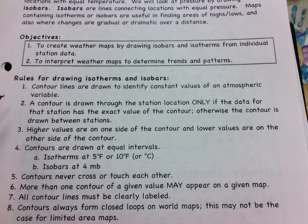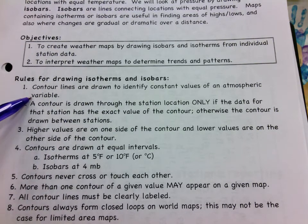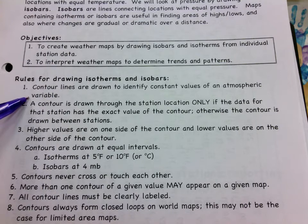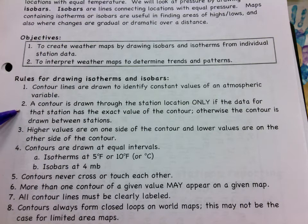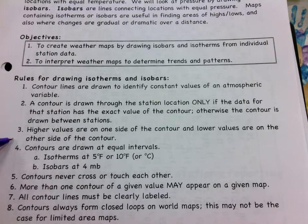We are going to find some atmospheric variable — whether it's temperature or air pressure — and draw contour lines of points of equal value. So if we're drawing a temperature line, it might be 30 degrees Fahrenheit all along that line. A contour can only be drawn through a data point if the data is the exact value of that contour; otherwise you have to estimate and draw it between weather data points. That puts higher values on one side and lower values on the other side.